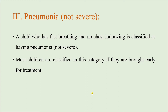The third classification is pneumonia that is not severe. The child only has fast breathing and does not have chest indrawing — remember, chest indrawing means severe pneumonia. Most children are classified in this category if brought early for treatment. If classification is delayed and the disease progresses, we may find severe pneumonia or very severe disease. But when brought early to the nearest healthcare center, in most cases the child is in the stage of pneumonia that is not severe.